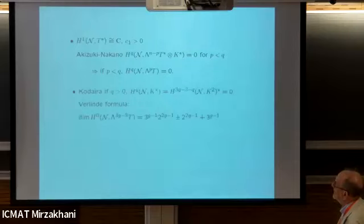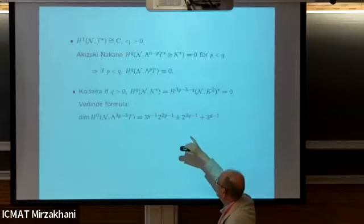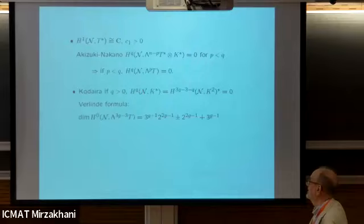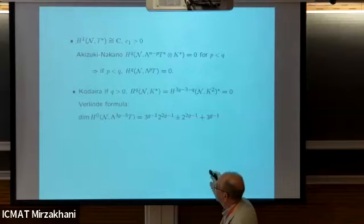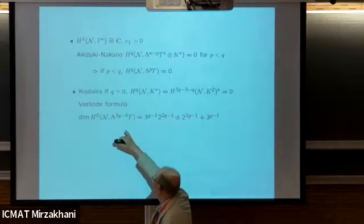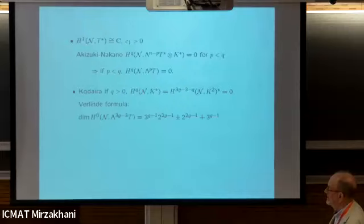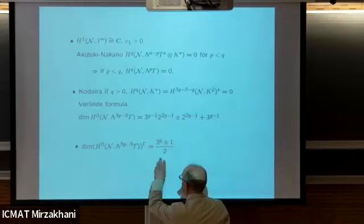What else do we know? If we look at the top exterior power - the anticanonical bundle - this is a line bundle over the moduli space of stable bundles. We have exact formulas - the Verlinde formula for holomorphic sections of that. This is for rank two. The dimension of M is 3g minus 3. This is the top exterior power, and the Verlinde formula gives this. If you look at the Γ-invariant part, the formula gives something non-trivial. So the very least we can say is that this type of cohomology is acted on non-trivially by Γ.